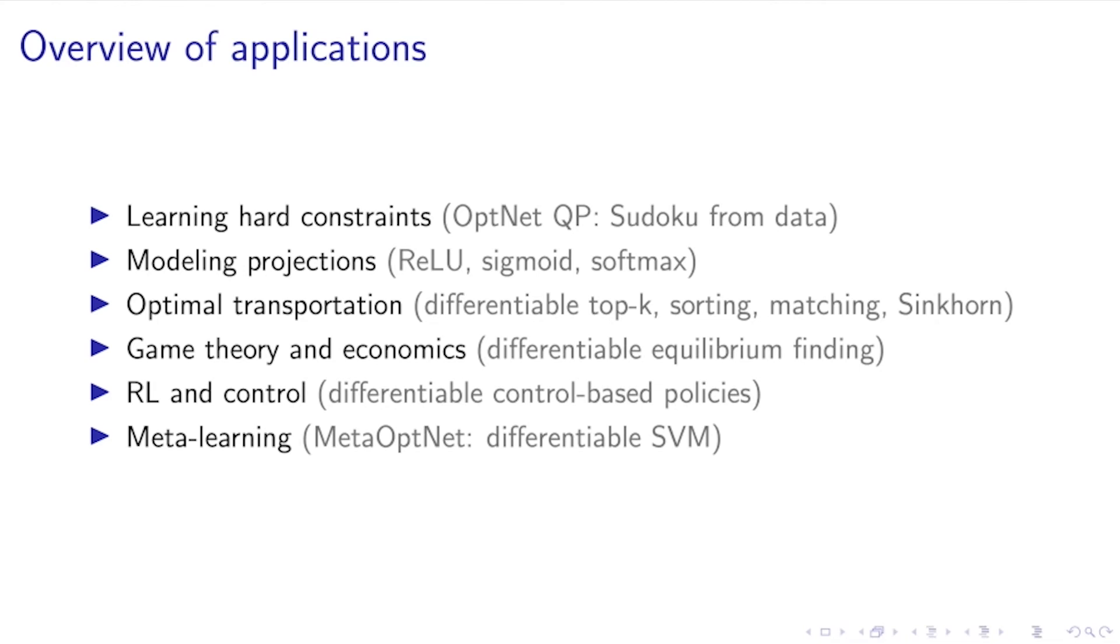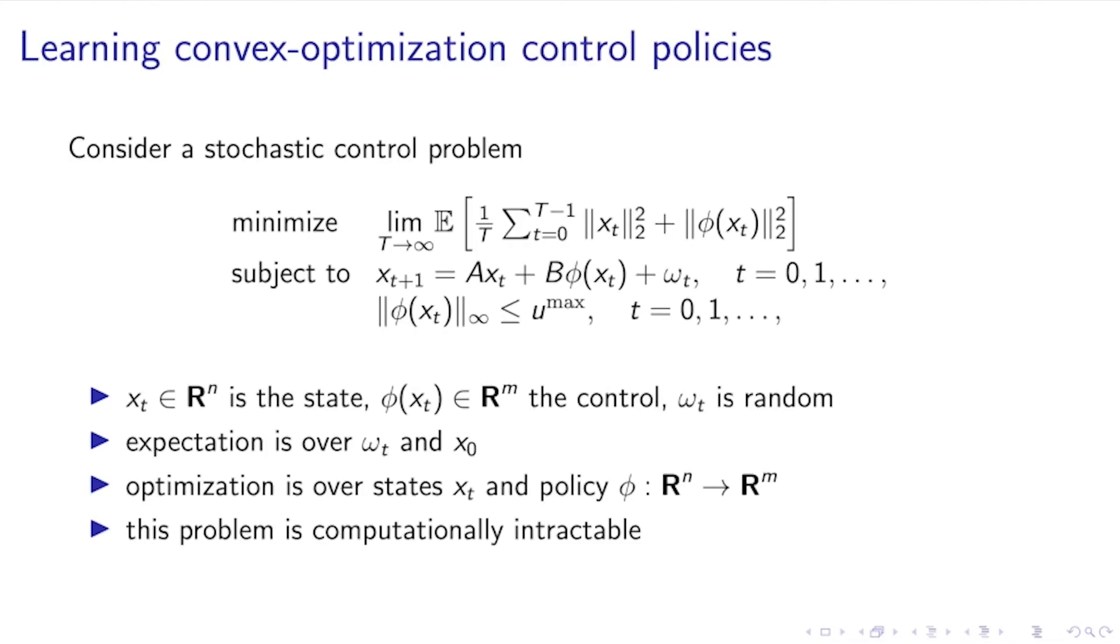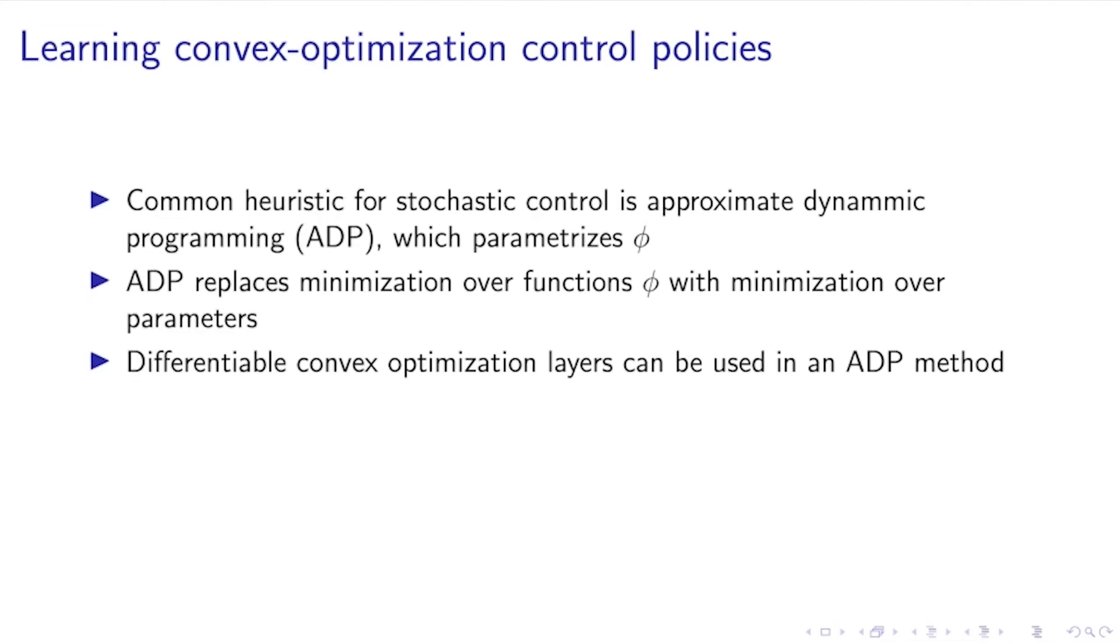Now that I've given a quick overview of the higher-level applications, we'll switch to talking about two specific applications in the controls and differentiable logistic regression and data poisoning setting. On the control side, we are considering stochastic control problems of the following form. We have a quadratic objective with some kind of regularization and control. The system is linear with this noise term, and we care about bounding the controls within some box. This is an extremely challenging problem to solve in this form because of the infinite horizon and the expectations.